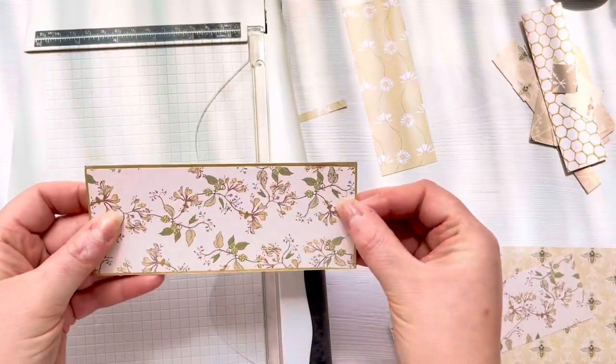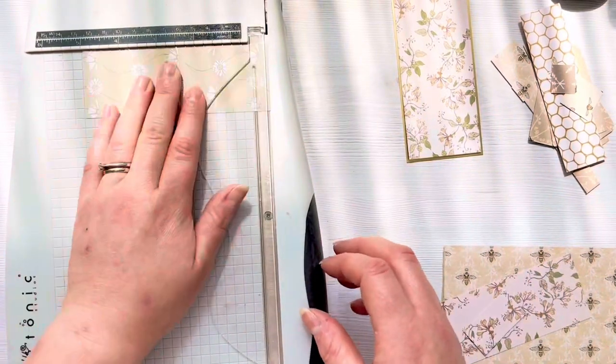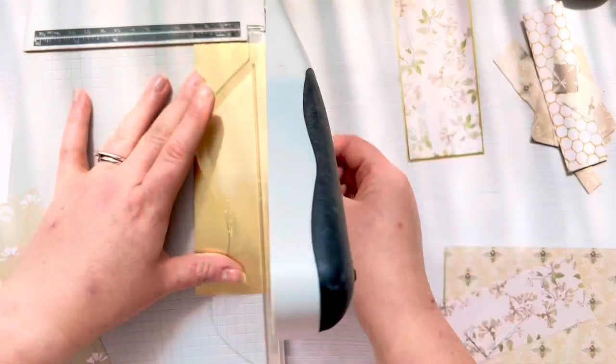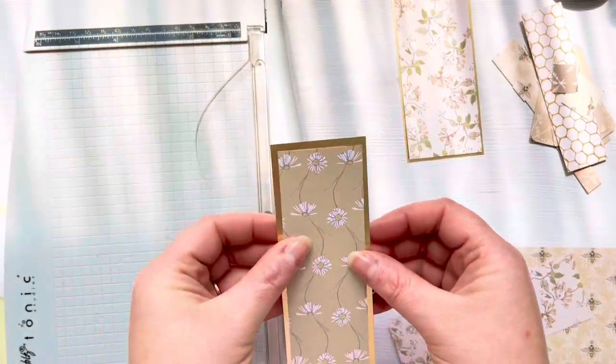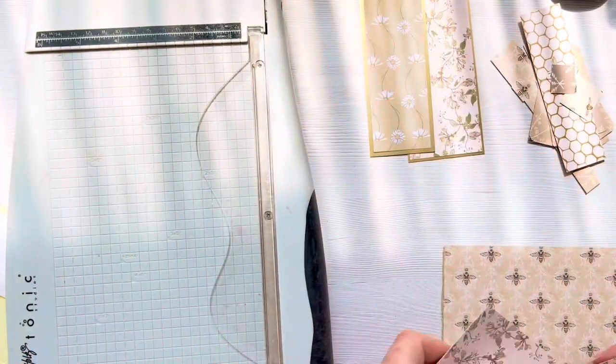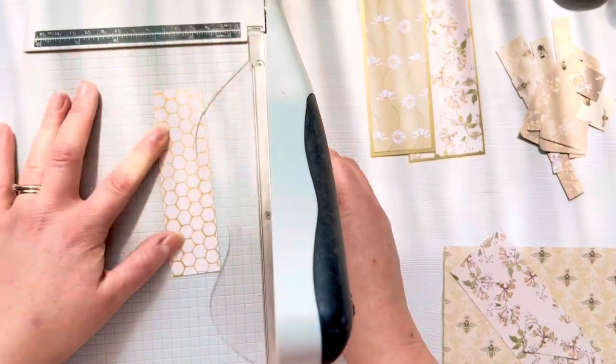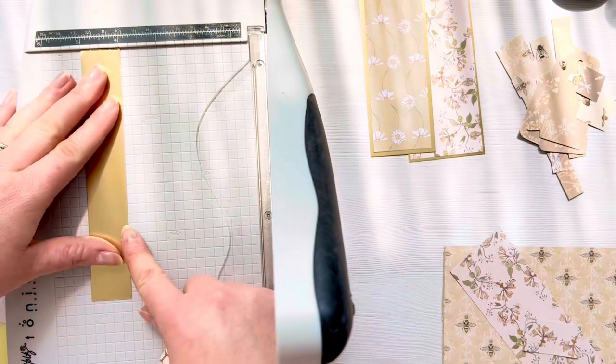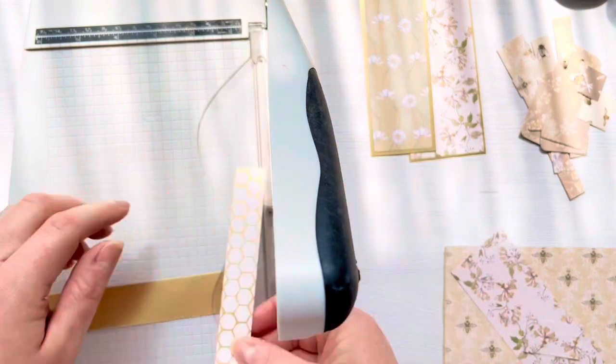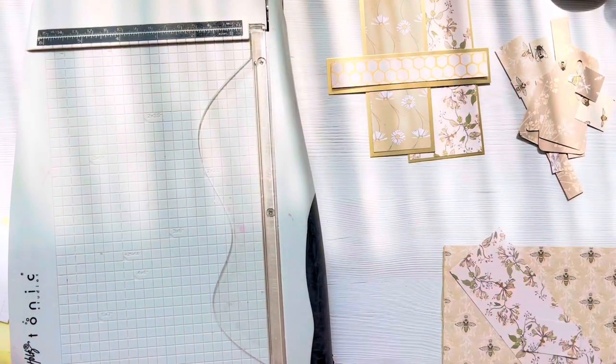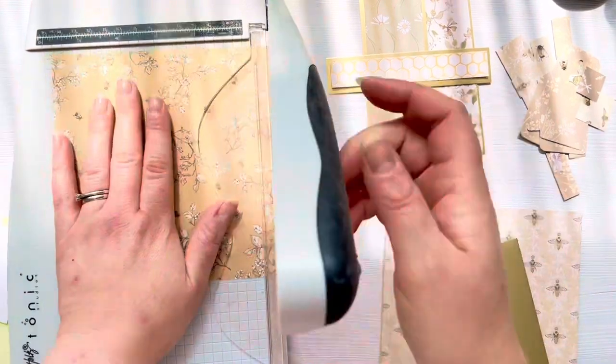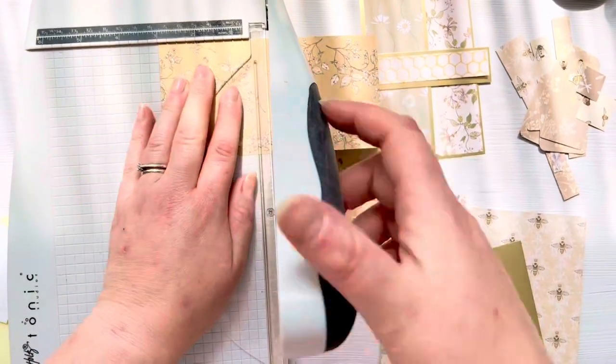If you do want the measurements here for the larger gold panel, it's 2 3/8 by 5 7/8 and the pattern paper is 2 1/4 by 5 3/4. Then for the smaller strip, the gold is 2 inches by 5 1/4 and the pattern paper is 1 3/4 by 5 inches. The square is the same as on the last one, 3 inches for the pattern paper, 3 1/4 inches for the metallic gold matte layer. And for the strip across the card, I've done the pattern paper at 4 3/4 inches by 3/4 inches and the gold is 1 inch by 5 inches.